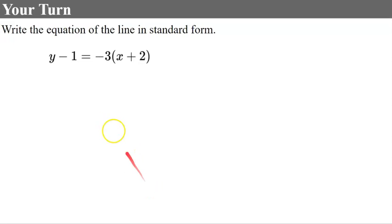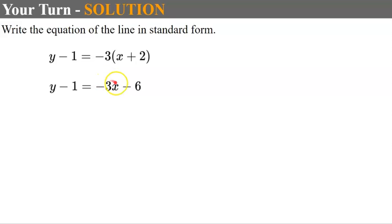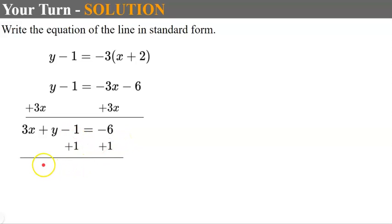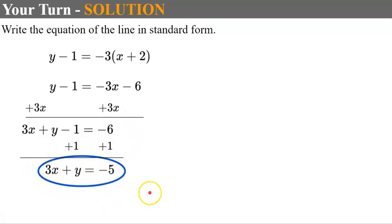Your turn again — pause and write the equation of this line in standard form. Welcome back. First, distribute the negative 3: negative 3x and negative 3 times 2 is negative 6. Now add 3x to both sides, giving 3x plus y minus 1 equals negative 6. Last step: add 1 to each side, giving 3x plus y equals negative 5. This is in standard form.